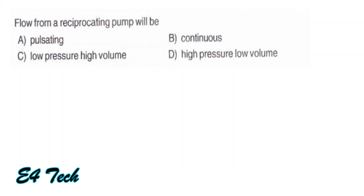The flow of a reciprocating pump will be pulsating. The reciprocating pump works on a piston movement — the piston moves in and out, so the flow is pulsating rather than continuous. That is option A.